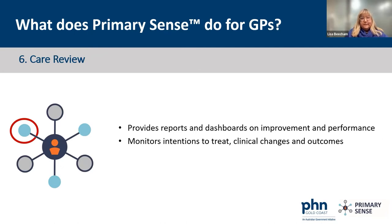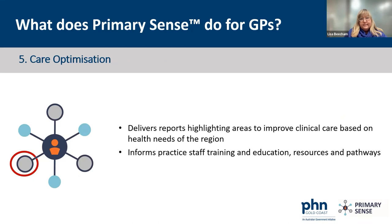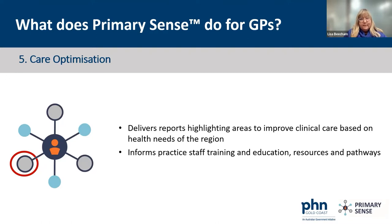Care optimization is another feature of Primary Sense. It delivers reports highlighting areas to improve clinical care based on the health needs of the region, and informs practice staff on training, education, resources, and pathways relevant to their particular patient population. Some practices have a really paediatric-focused population, others have a chronic disease focus or niche populations. Primary Sense doesn't just code four chronic diseases like some old tools — it creates codes for up to 30 or 40 different population health profiles.